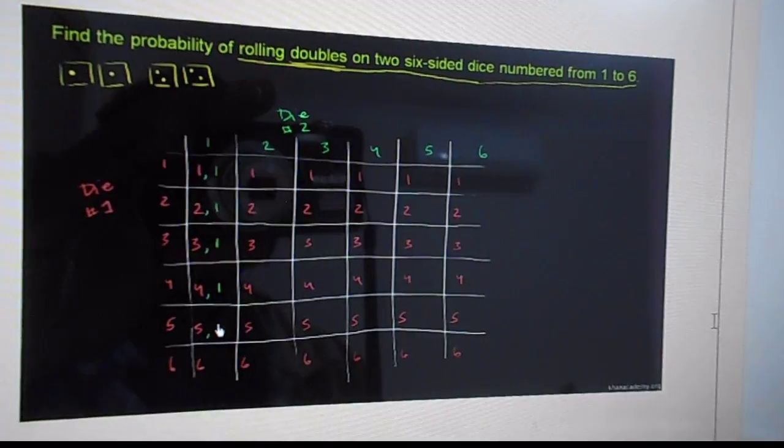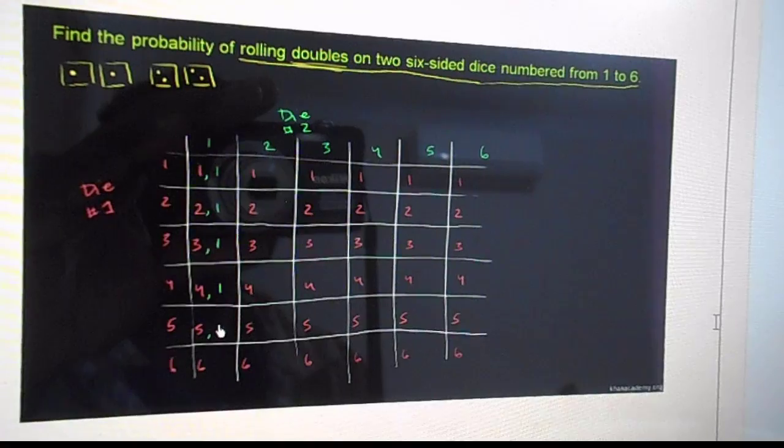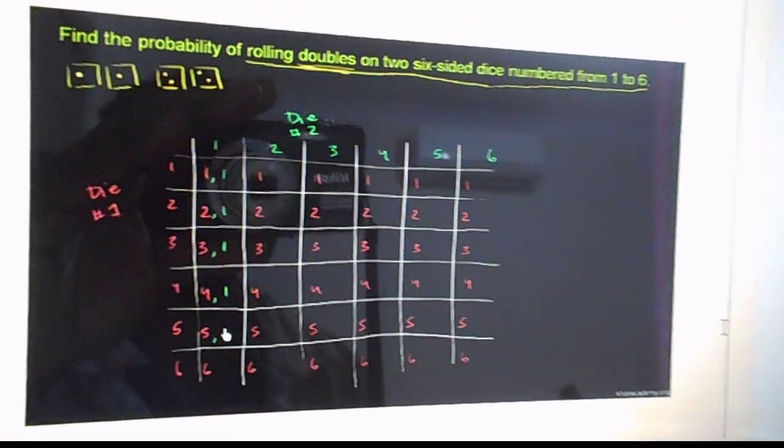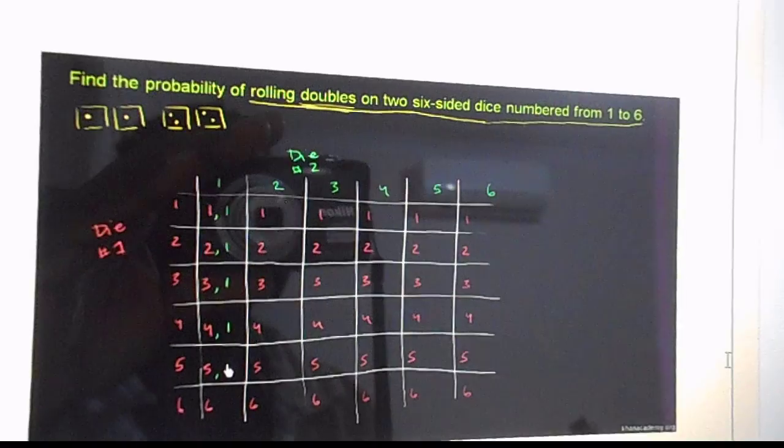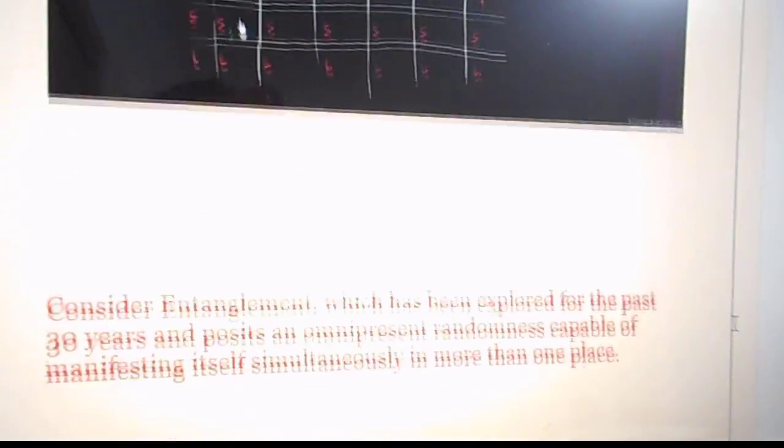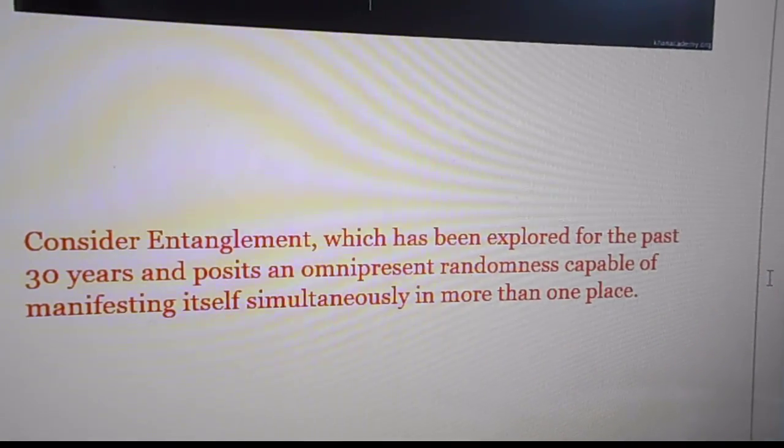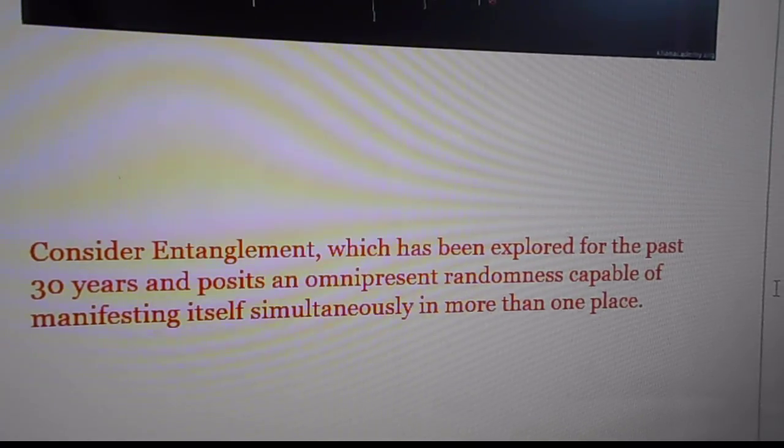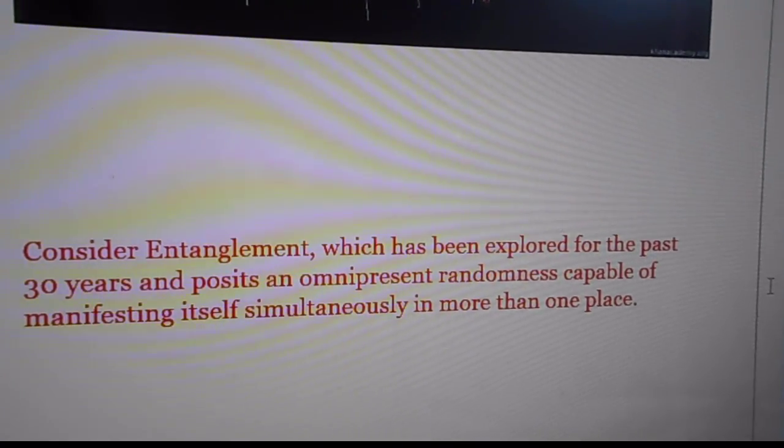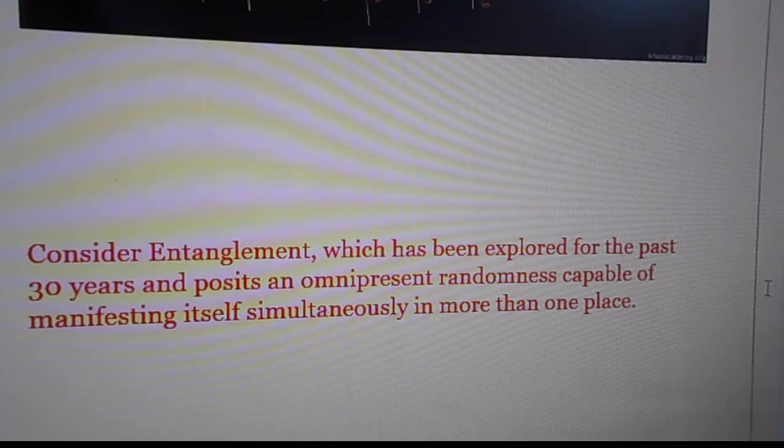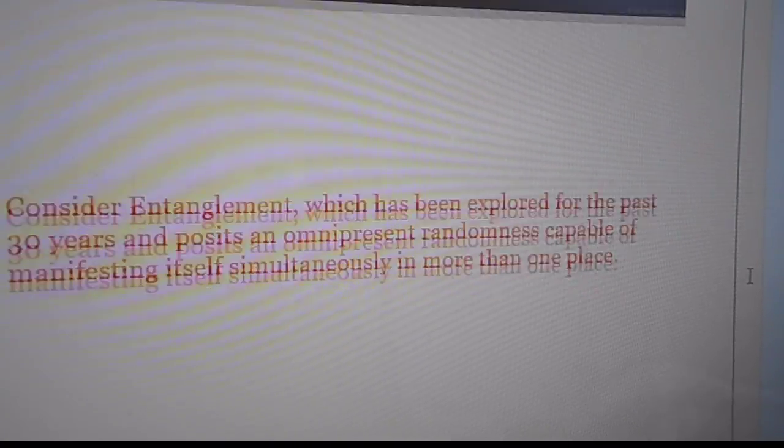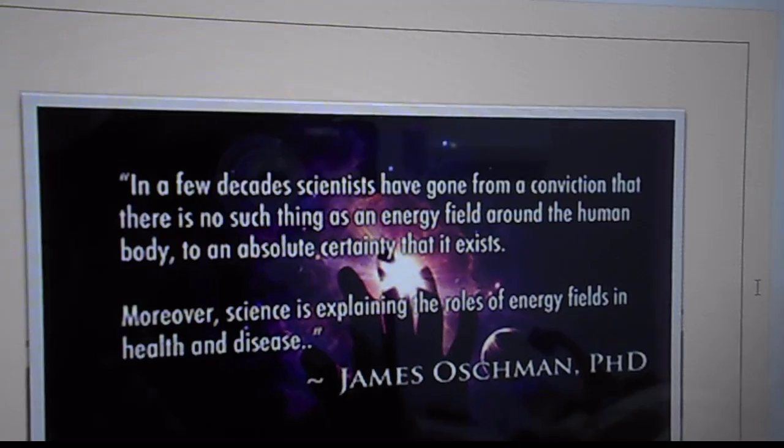You can see that's a mathematical chart. When you cast a dice, you come up with 64 permutations out of which you should be able to provide interpretations and it's called entanglement, which has been explored in the last 30 years and poses an omnipresent randomness capable of manifesting itself simultaneously in more than one places at one time.